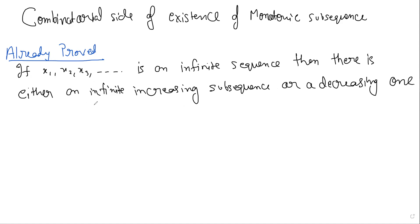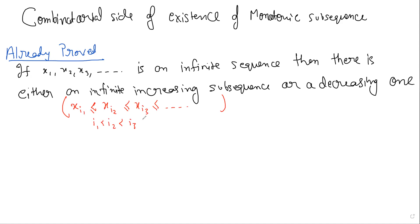This is something they have already seen. Formally, an infinite increasing subsequence means x_{i₁}, x_{i₂}, x_{i₃}, … where i₁ < i₂ < i₃ < … and the values are increasing. This is the theorem we already proved. If you don't remember the proof or aren't confident about it, go back and have a look — the idea of the proof is important.